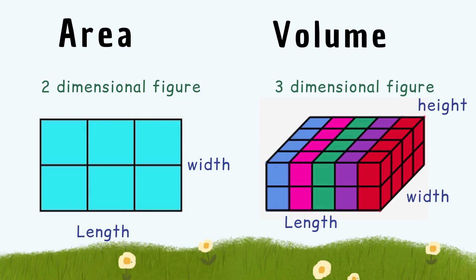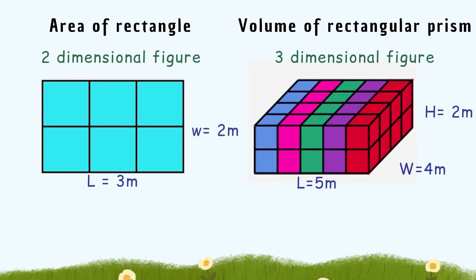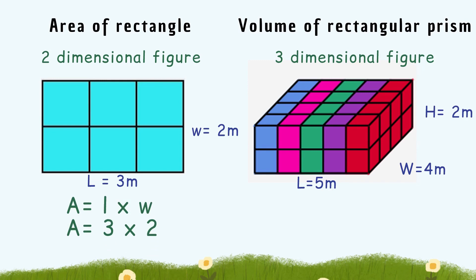In finding the area of a rectangle, we need to find the number of square units, and in finding the volume of a rectangular prism, we find the number of cubic units. The length of the rectangle here is three meters and the width is two meters. Using the formula length times width, the area equals three times two, which is six square meters.